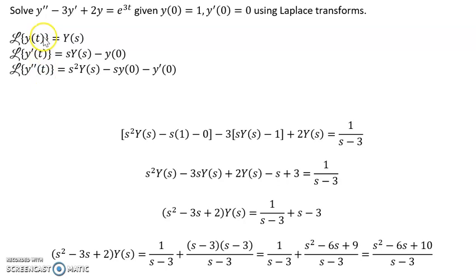We're going to need the ones for finding the Laplace transform of a function and its derivatives. We don't know what y(t) is, so we're just going to use notation. In terms of the Laplace transform of y, which we're trying to solve for, the first derivative is going to be given by s times Y(s) minus the initial condition at 0.